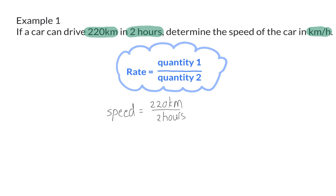So the 220 km will be in our numerator, and the 2 hours in the denominator. After simplifying, you will have a speed of 110 km per hour.